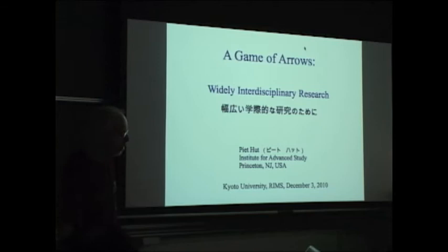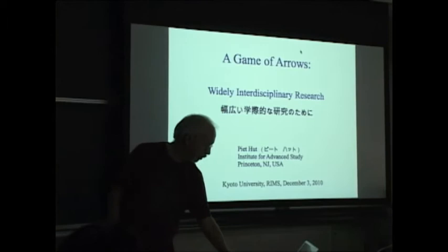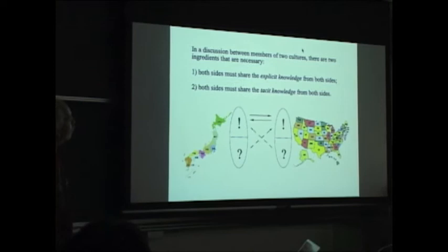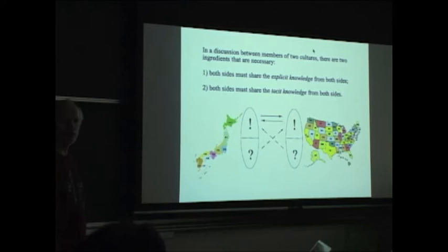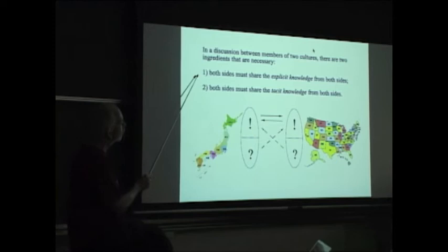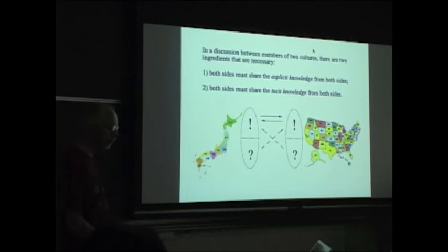Even though I talk about arrows, most of the arrows are simple arrows, but in the future, hopefully, they will be categorized. So, I will talk about widely interdisciplinary research. And in general, in a discussion between members of two cultures, there are two ingredients that are necessary, whether it's two countries, or two fields in academics, or basically any two different cultures which have a different background. Both sides must share the explicit knowledge, of course, but both sides must share the tacit knowledge. The tacit knowledge is knowledge which you normally don't talk about, but it is in the background.